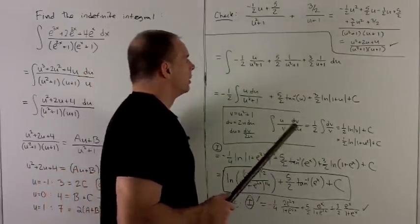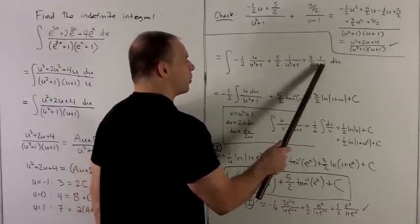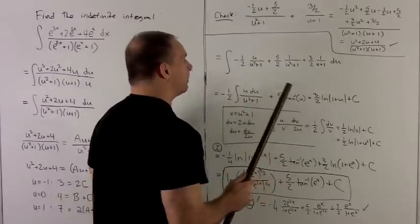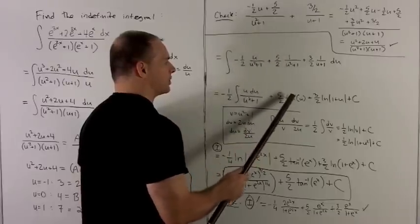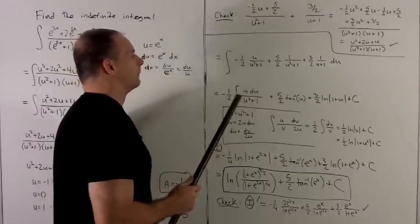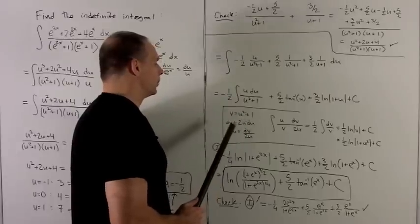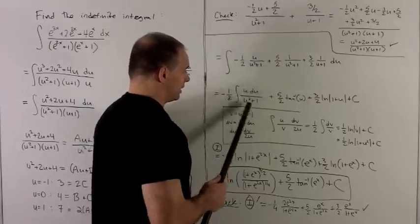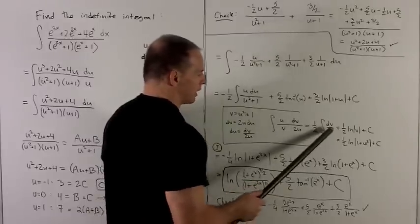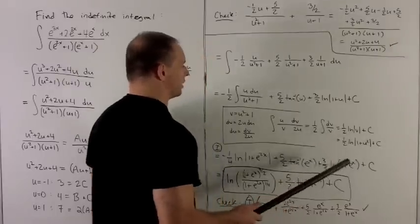Now let's look at the indefinite integral. Two of these terms I can deal with immediately. For 1 over u plus 1, substituting out u plus 1 whose derivative is 1, this is just natural log of absolute value of 1 plus u — with 3 halves in front. The 1 over u squared plus 1 term you should recognize as inverse tangent of u, with 5 halves in front. Then for minus one half times u over u squared plus 1, I let v equal u squared plus 1, dv equals 2u du. That gives a half natural log of absolute value of v, which becomes one half natural log of 1 plus u squared, plus a constant.